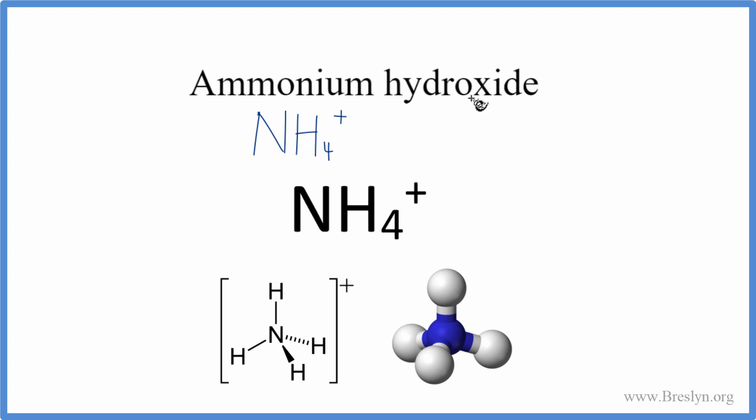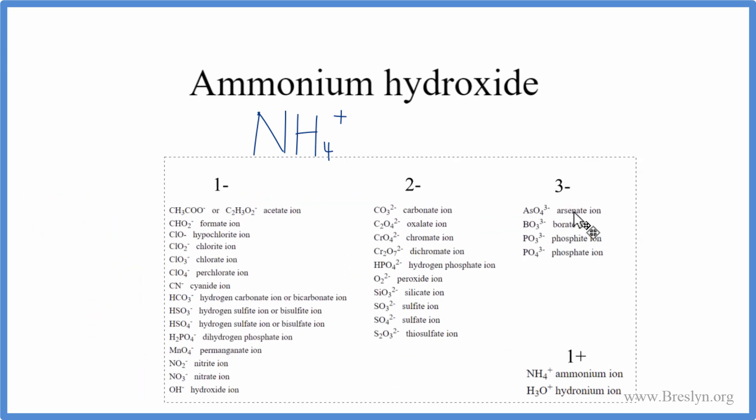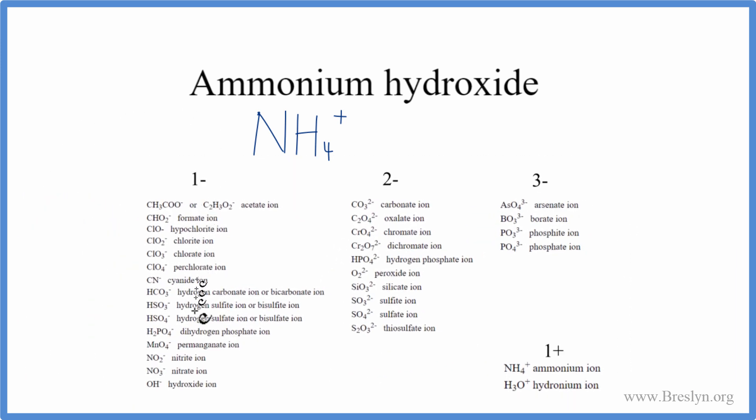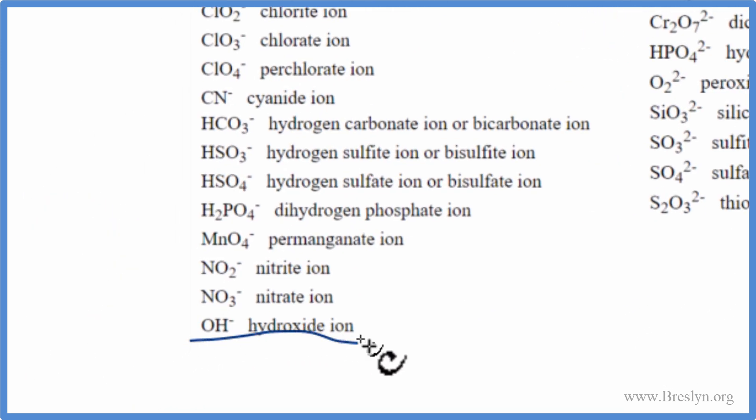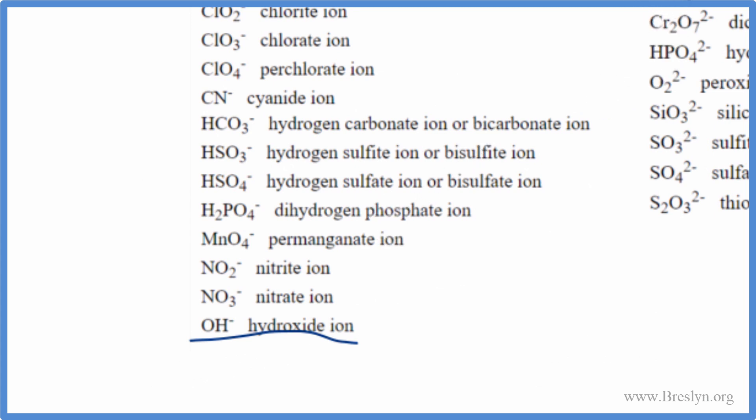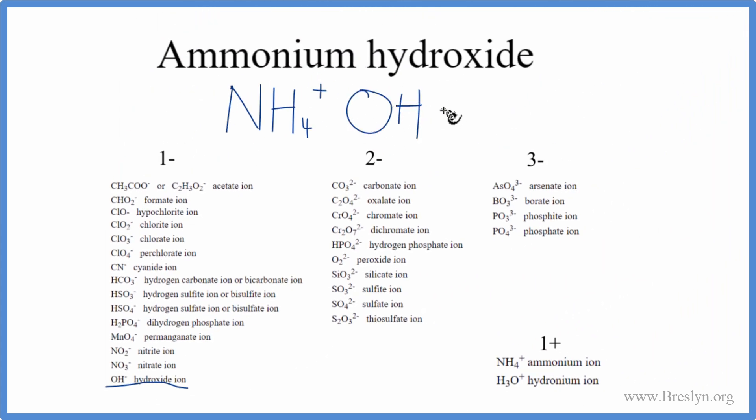This is another good one to remember. You won't find it on the periodic table. So let's go back to our chart here and see if we can find what the hydroxide ion looks like. We go down and clear at the bottom, OH-, that's the hydroxide ion. Let's put OH- here next to our ammonium ion.